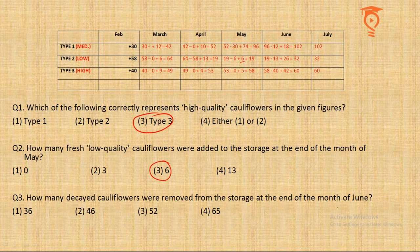Question 3 — how many decayed cauliflowers were removed from storage at the end of June? We need to add the decayed numbers: 12 and 13 makes 25 — wait, these add up to 25 but the answer is noted as 65. Adding all types' decayed numbers: the fourth option becomes the answer.